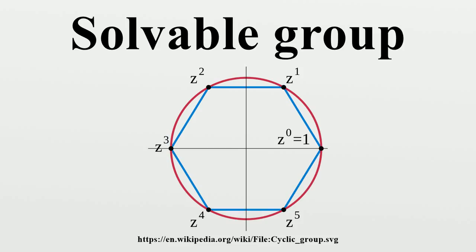Orders of non-solvable groups are: 60, 120, 168, 180, 240, 300, 336, 360, 420, 480, 504, 540, 600, 660, 672, 720, 780, 840, 900, 960, 1008, 1020, 1080, 1092, 1140, 1176, 1200, 1260, 1320, 1344, 1380, 1440, 1500.